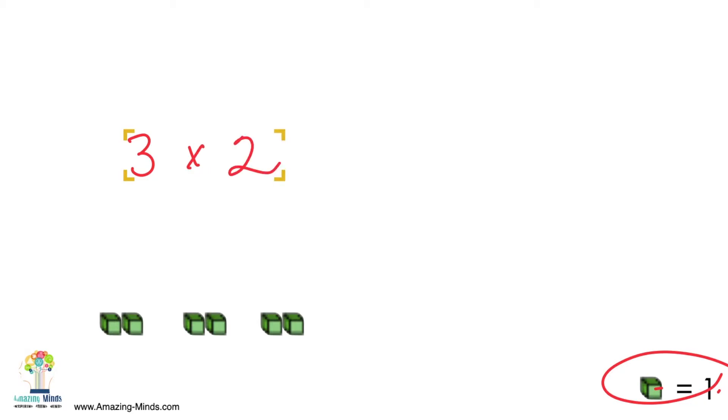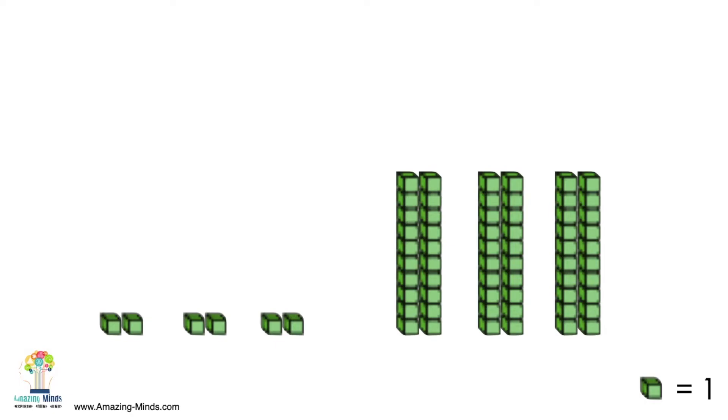But what if that changes and now I have instead of 3 times 2, I have 3 times 20. One of the ways that I think is helpful for students is to say, you have 3 times, but you actually have 2 tens.